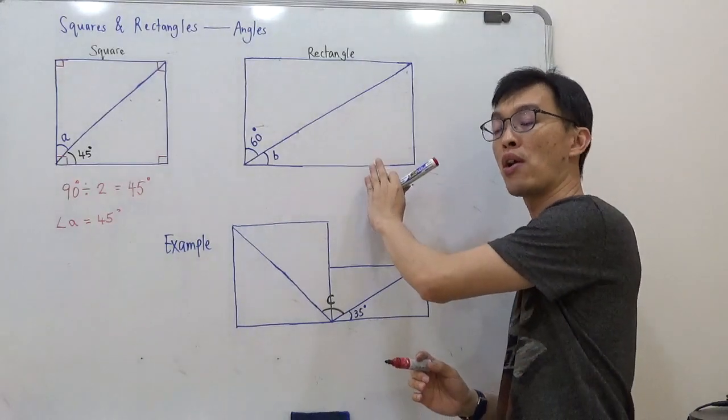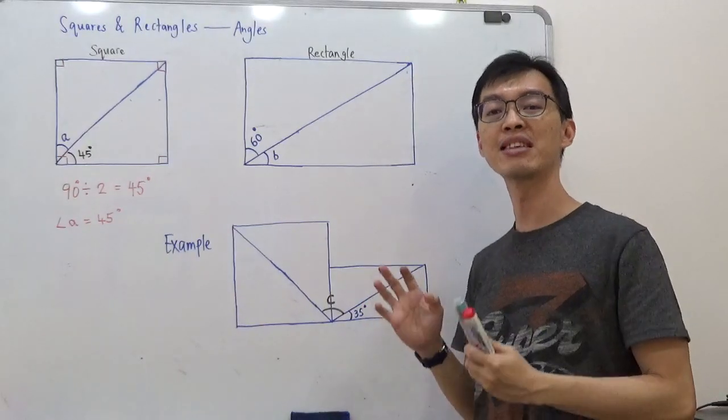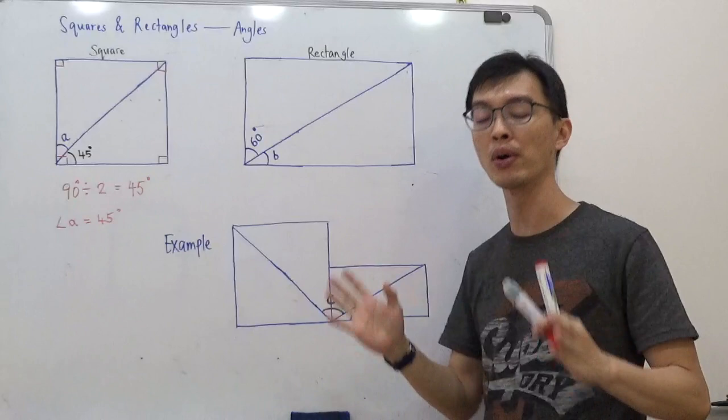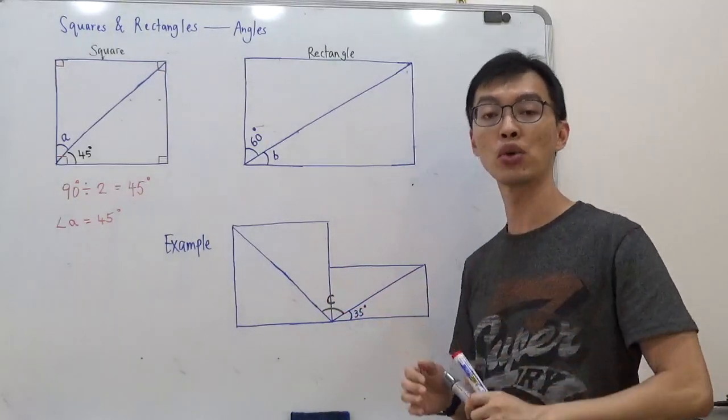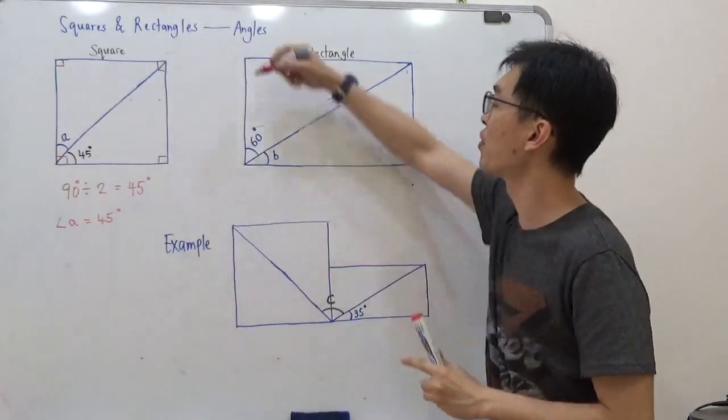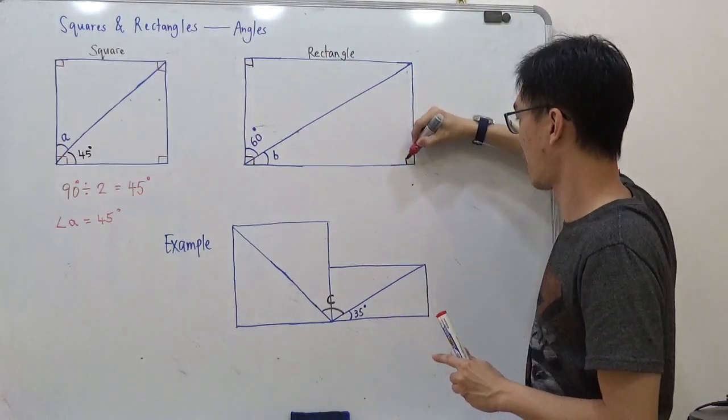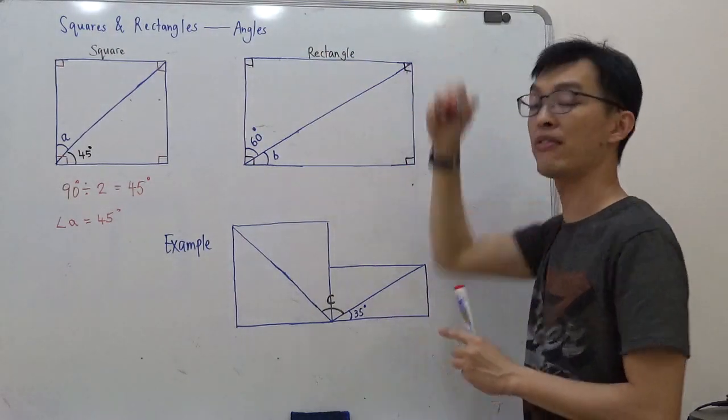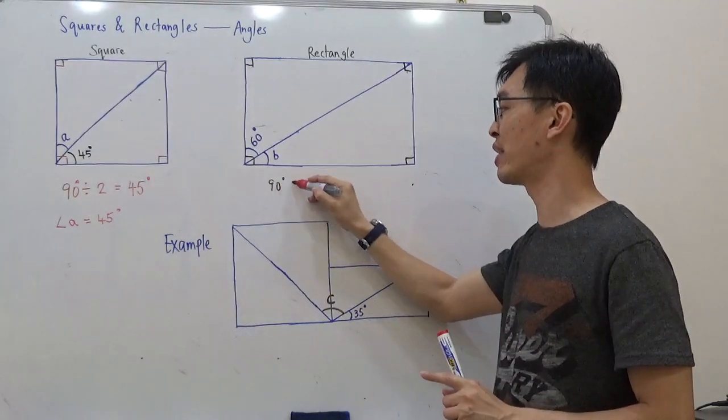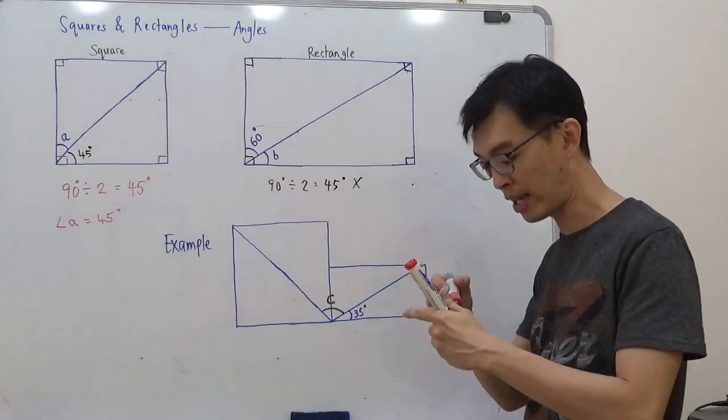Coming on to rectangles now. A lot of people will also think it is 90 degrees divided by 2 equals to 45. No, it's not correct. Remember, it's not right. You can't do that. Rectangle is very different from squares. Although they have four right angles as well—one, two, three, and four—you can't just do this. You can't do 90 degrees divided by 2 equals to 45. No, this is wrong. Don't do that.